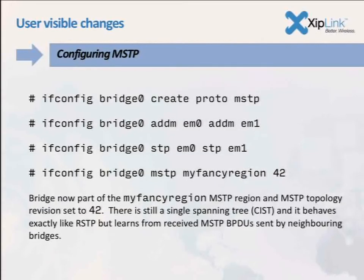Cisco works around race conditions by having you describe your topology and then committing it all at once — not just typing the last command and hoping. Unfortunately, ifconfig doesn't make this easy. ifconfig is a very thin user-space wrapper around ioctl, so every command you type just goes into the kernel and you hope for the best. I'd have to rearchitect ifconfig quite a bit, but hopefully someone else will do that.